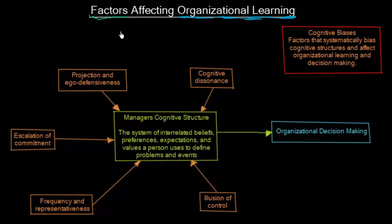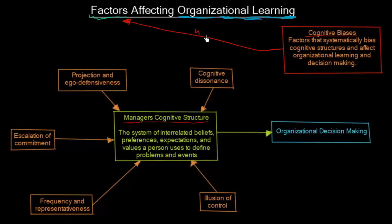But before we start with this topic, it is necessary to learn two concepts. There is a manager's cognitive structure, and then there are cognitive biases. These cognitive biases are going to be the factors affecting organizational learning, and they are going to do so in a negative way. So let's start with the term manager's cognitive structure.